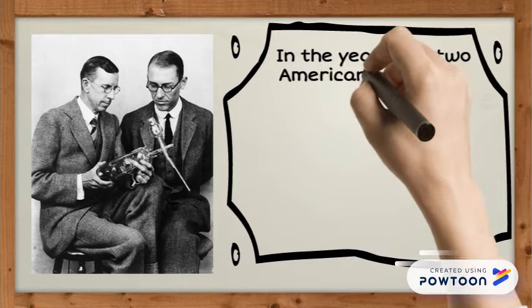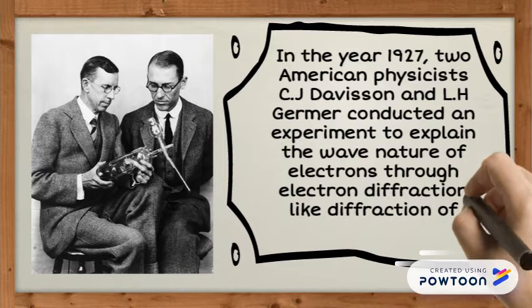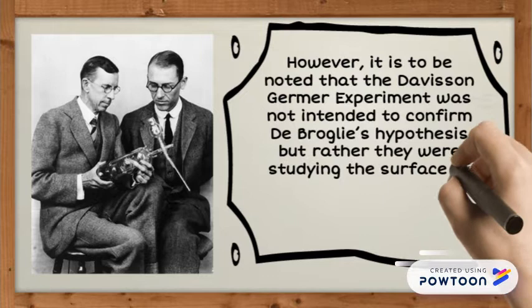Only three years later, in the year 1927, two American physicists C.J. Davison and L.H. Germer conducted an experiment to explain the wave nature of electrons through electron diffraction, like diffraction of light waves. However, it is to be noted that the Davison-Germer experiment was not intended to confirm De Broglie's hypothesis, but rather they were studying the surface of a nickel. This was somewhat an accidental discovery.